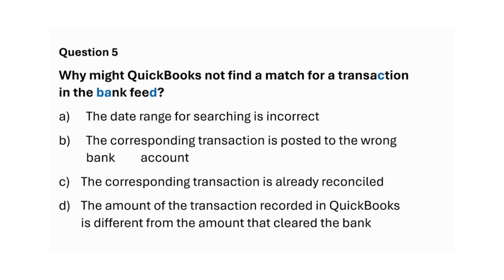Why might a transaction not be found within the date range for a transaction in the bank feed? A. The date range for searching is incorrect. B. The corresponding transaction is posted to the wrong bank account. D. The amount of the transaction recorded in QuickBooks is different from the amount that cleared the bank. Answer: Option A — The date range for searching is incorrect. Option B — The corresponding transaction is posted to the wrong bank account. Option D — The amount of the transaction recorded in QuickBooks is different from the amount that cleared the bank.